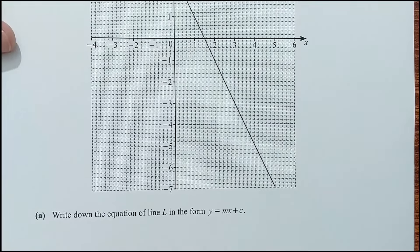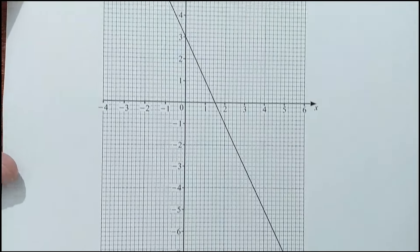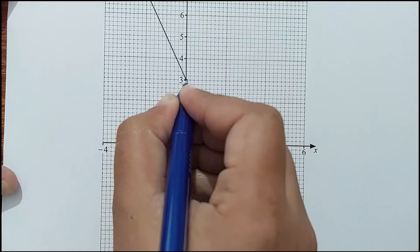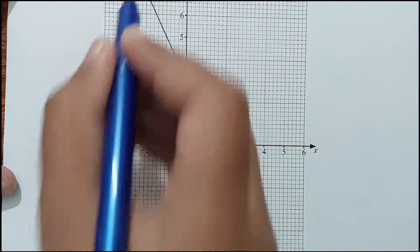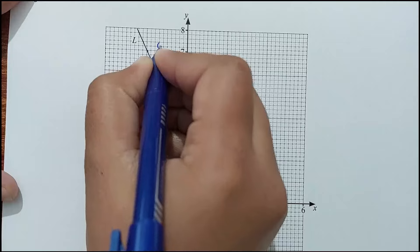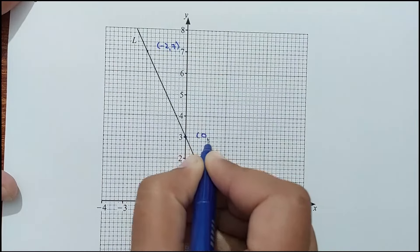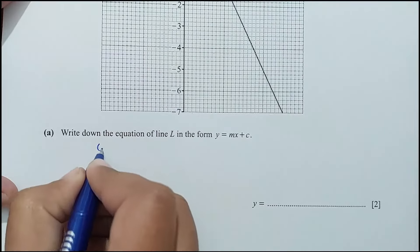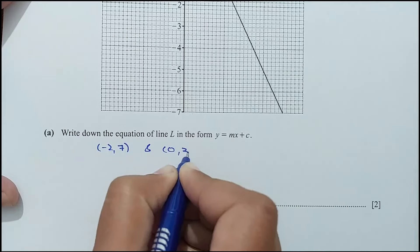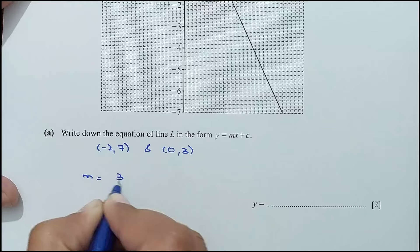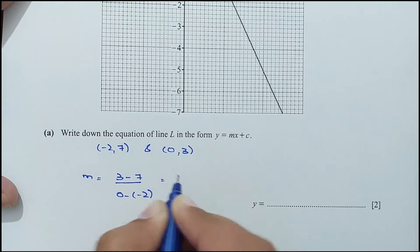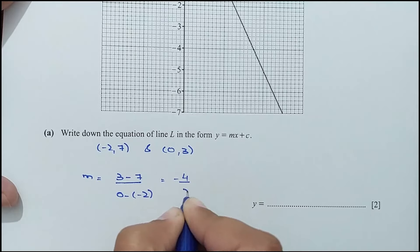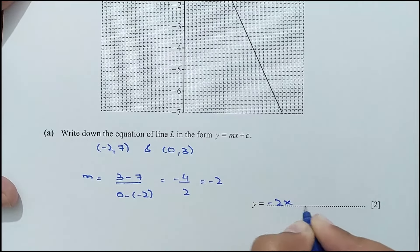Question 6, part A: write the equation of line L in the form y = mx + c. The y-intercept is 3. Using two points (−2, 7) and (0, 3), the slope = (3 − 7) ÷ (0 − (−2)) = −4 ÷ 2 = −2. So the equation is y = −2x + 3.